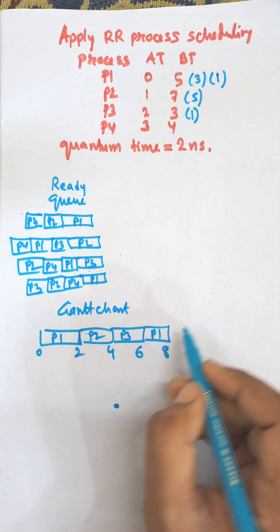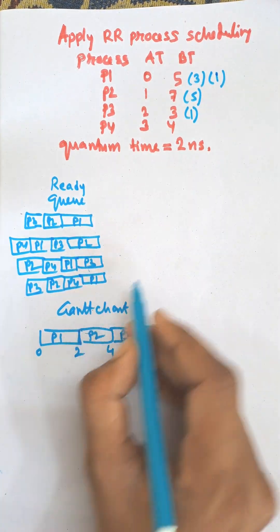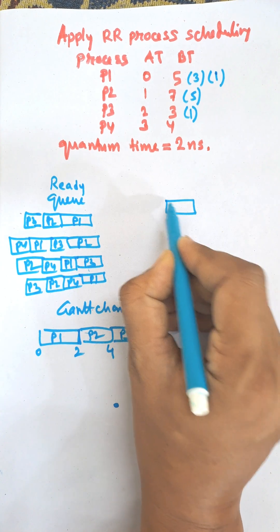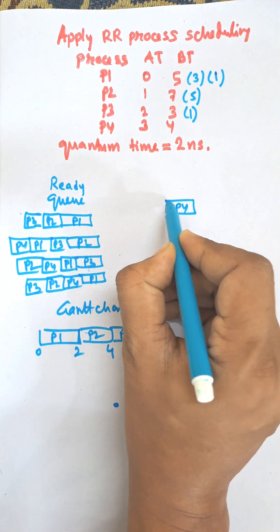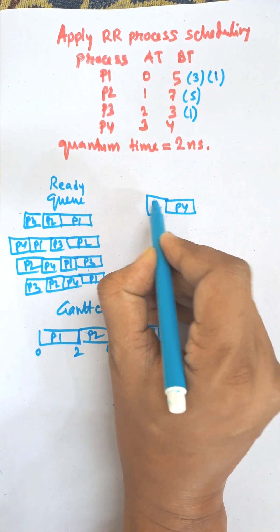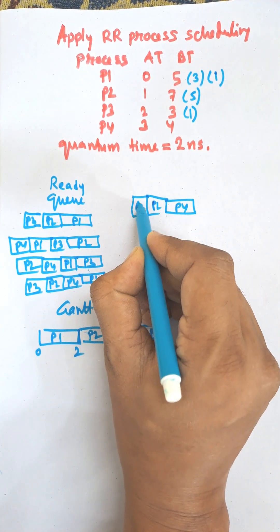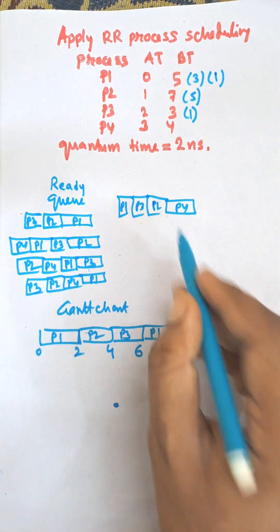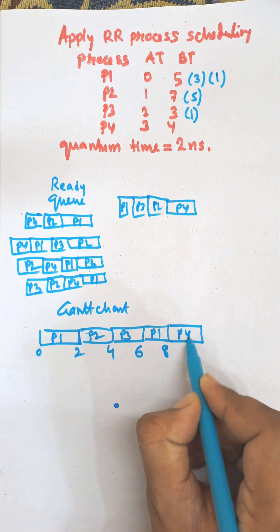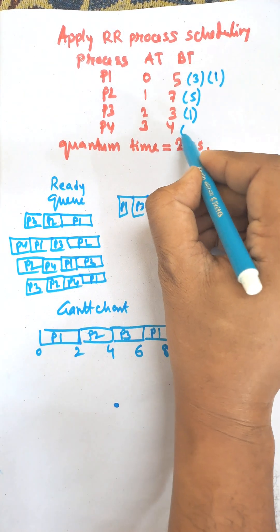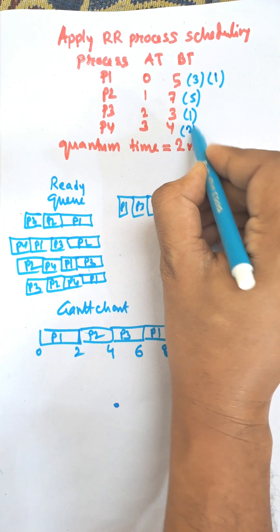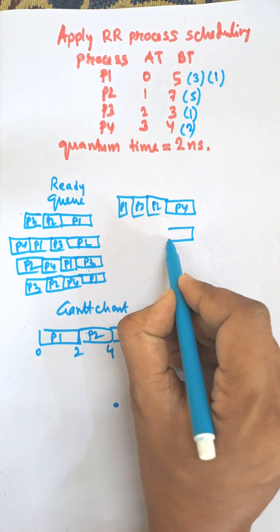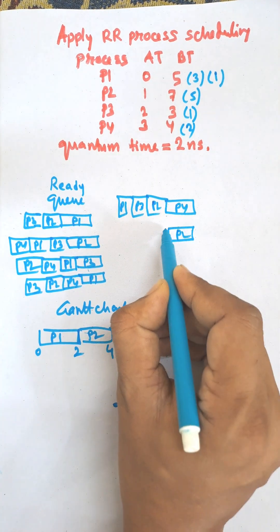After P1, P4 will be the next at the front. The queue order is P4, P2, P3, then P1. P4 will execute up to time 10, remaining time is two. Then the queue becomes P2, P3, P1, P4, and P4 goes to the end of the queue.